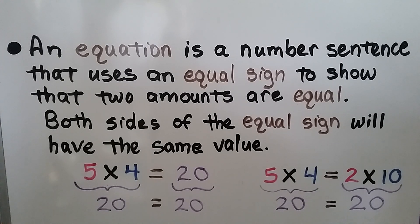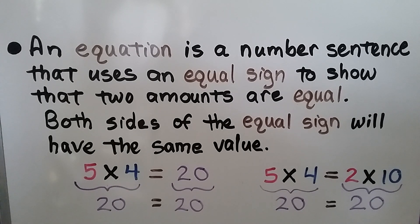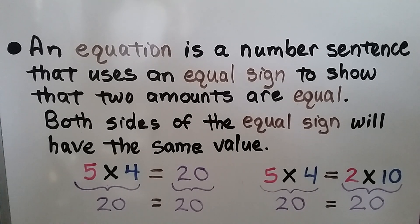We can also have two facts that are equal to each other. We have 5 times 4, which is equal to 20 on the left side, and 2 times 10, which is equal to 20 on the right side. Both sides of the equal sign are equal to 20.